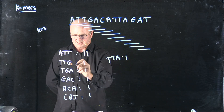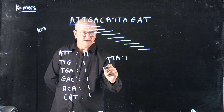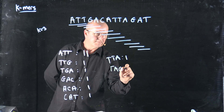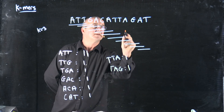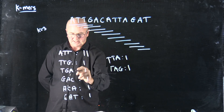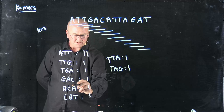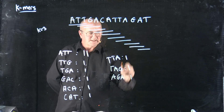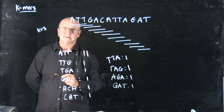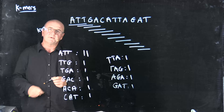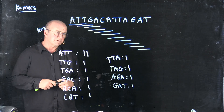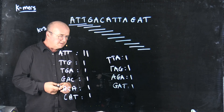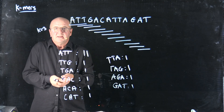TAG — have I seen TAG? Not yet. GAT. Okay, so I've counted all of my K-mers where K is equal to 3. This is kind of a naive approach of doing it.